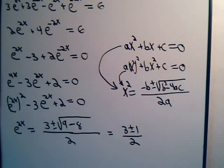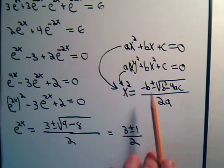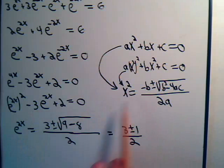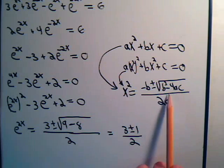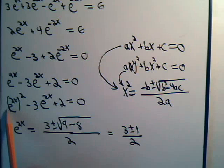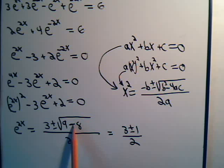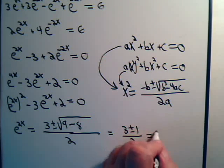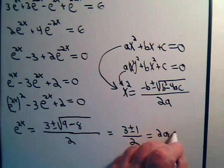Let's stop and check: minus b gives +3, b² is 9, minus 4ac where a=1 and c=2 gives 8, divided by 2 times a which is just 2. So 9 minus 8 is 1, the square root of 1 is 1, giving (3 ± 1) / 2. That equals 2 or 1.